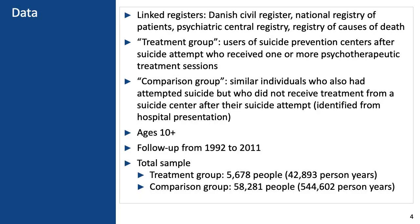Those of you who know about the Scandinavian registries know that they are amazing resources, unlike anything we have in the United States. These registers are administrative sources for the entire country that merge together various information about people. In this case, we used a combination of the Danish Civil Register — basic information about individuals including family status, marital status, birth and death dates — the National Registry of Patients with information on medical treatments and conditions, a psychiatric central registry, and a registry of causes of death. Particularly relevant for suicide is that there's strong belief that suicide is actually captured quite reliably in this data, unlike many other data sources.